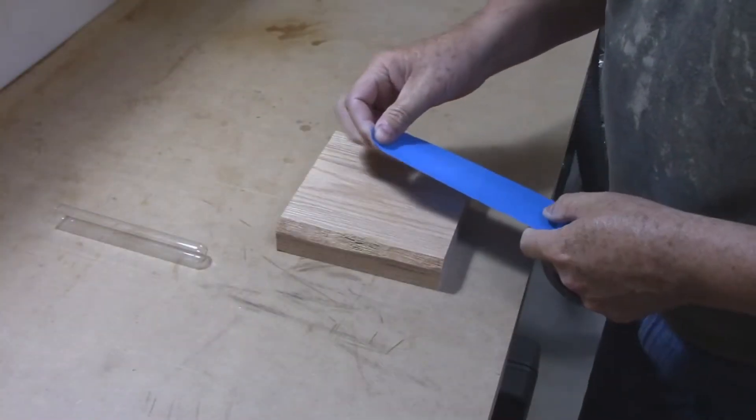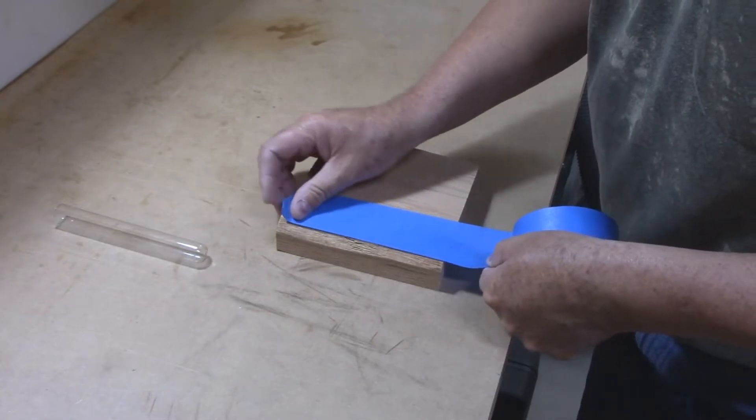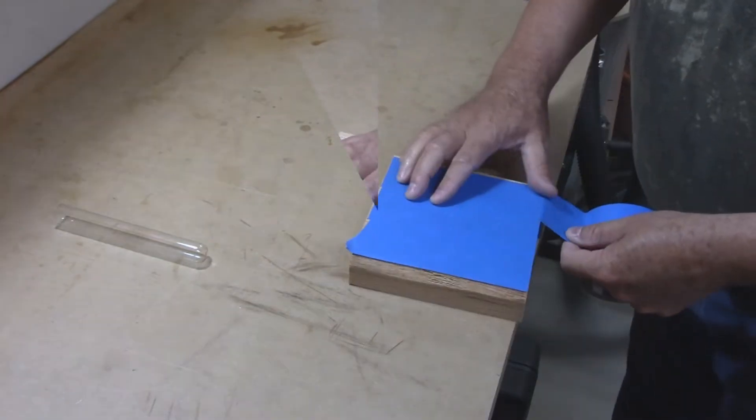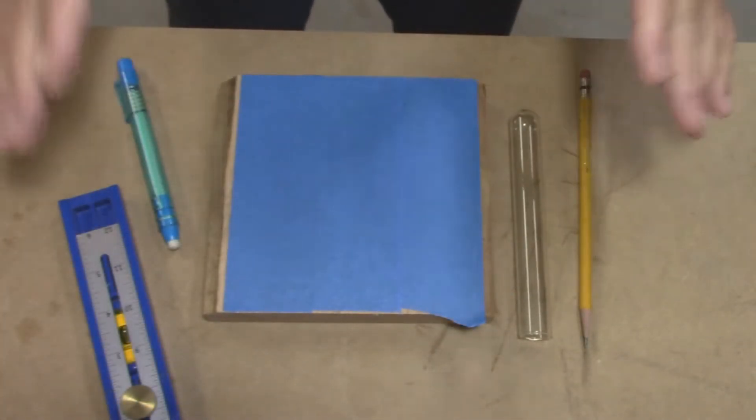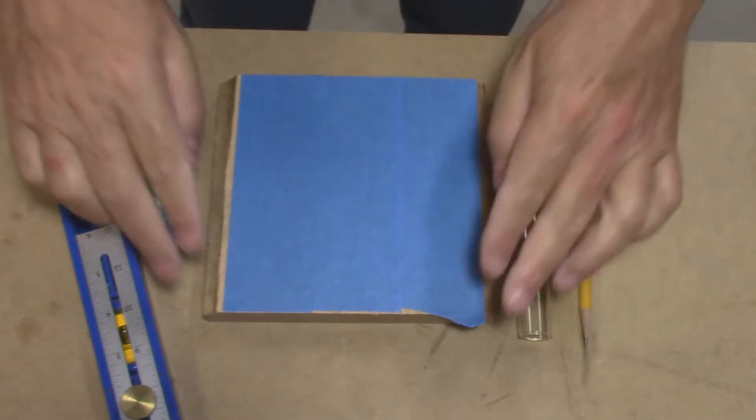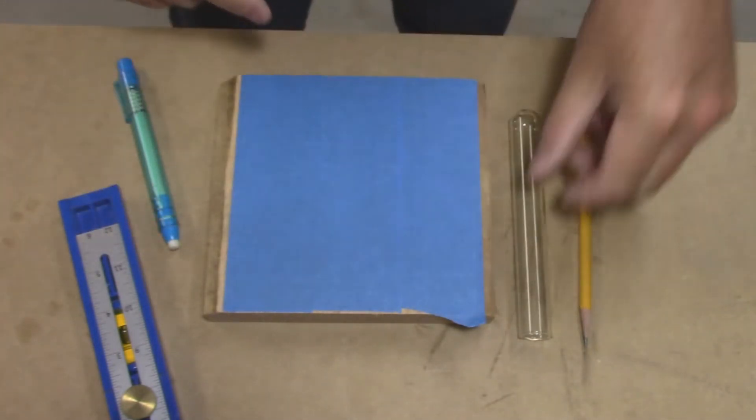I'm going to put some painter's tape on this so I can draw out my pattern. Now this is where your imagination comes in. You can literally draw anything you want. I'm going to cut out the outside and hollow out the inside.